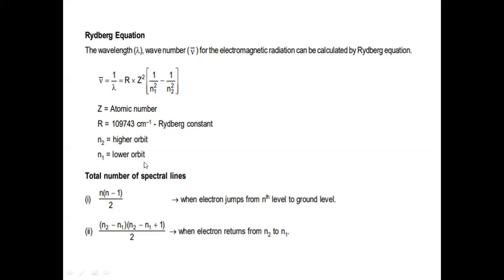Total number of spectral lines when an electron jumps from the nth level to ground level: n(n−1)/2. When an electron jumps from n₂ to n₁: (n₂ − n₁)(n₂ − n₁ + 1)/2.